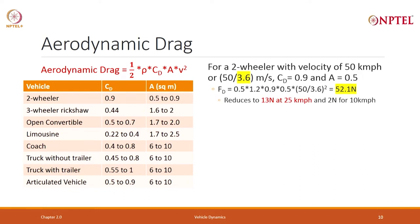Now let us actually calculate. I will take the same two-wheeler we talked about, except at 50 km/h, which equals 50 divided by 3.6 m/s. CD is 0.9 for a two-wheeler and area is 0.5 m². I compute the force and it comes out to be 52.1 Newton at a velocity of 50 km/h.